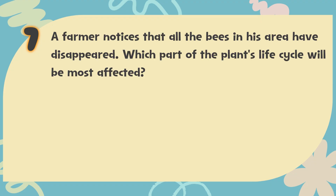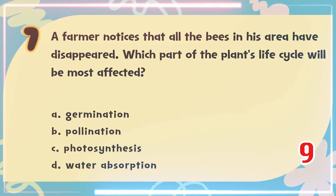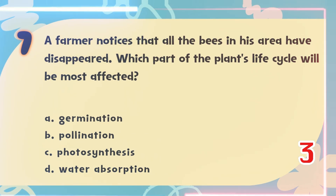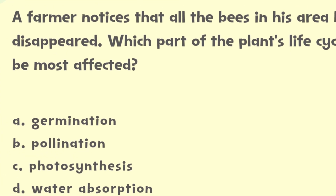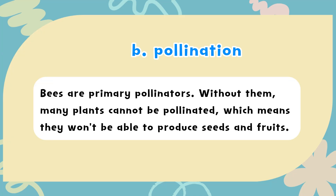Number 7. A farmer notices that all the bees in his area have disappeared. Which part of the plant's life cycle will be most affected? The choices are: A. Germination, B. Pollination, C. Photosynthesis, D. Water Absorption. The correct answer is B. Pollination. Bees are primary pollinators. Without them, many plants cannot be pollinated, which means they won't be able to produce seeds and fruits.